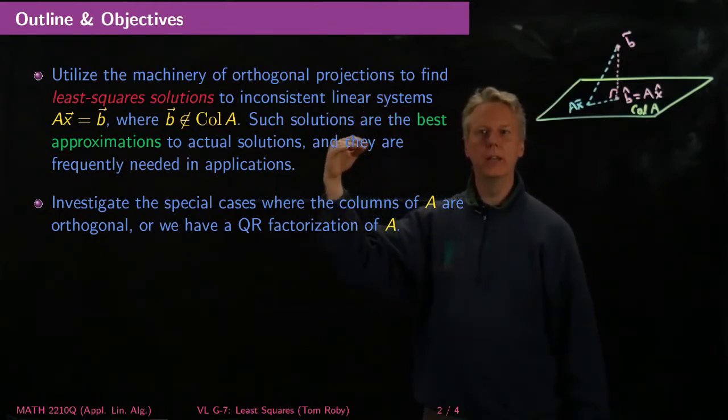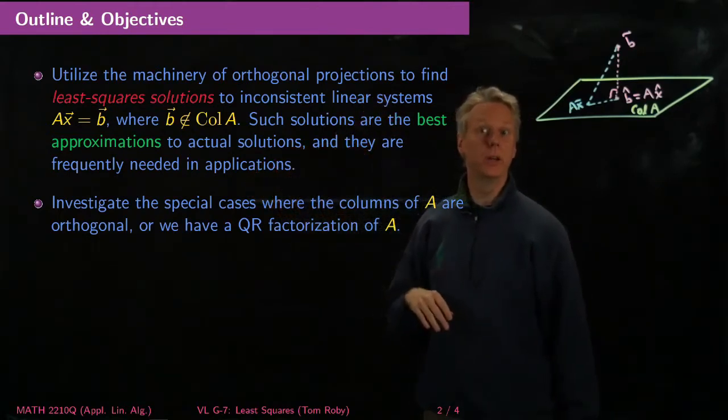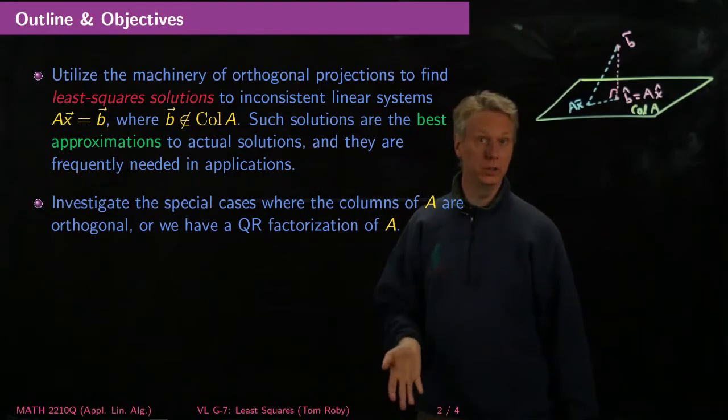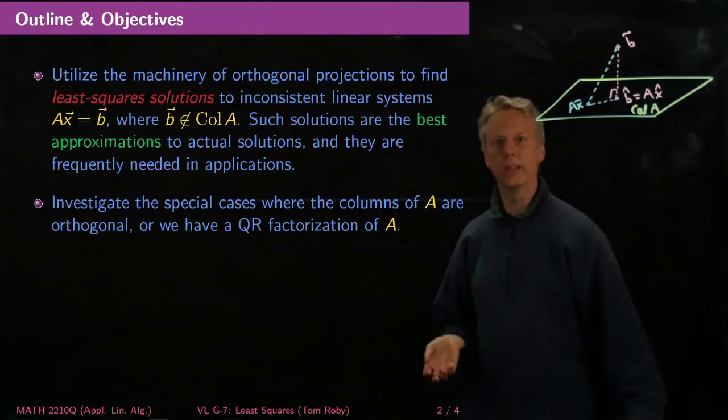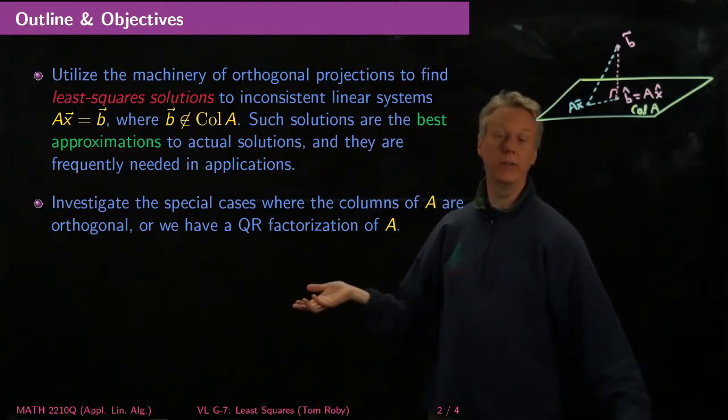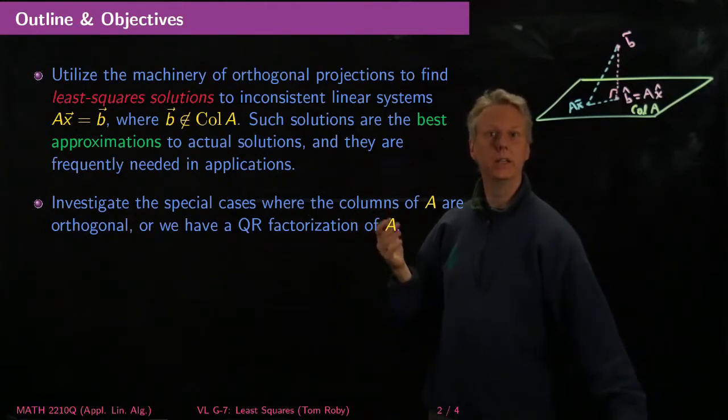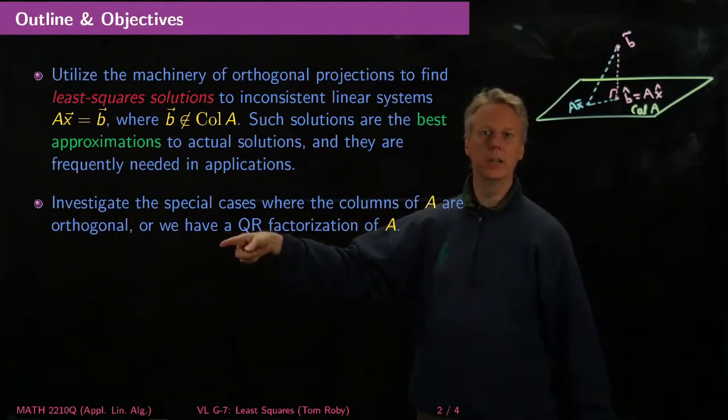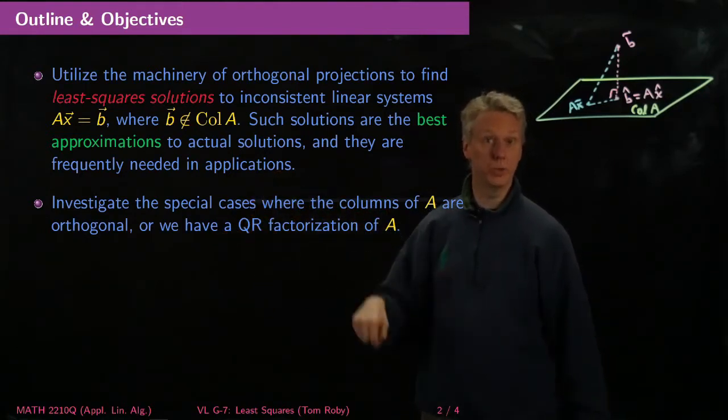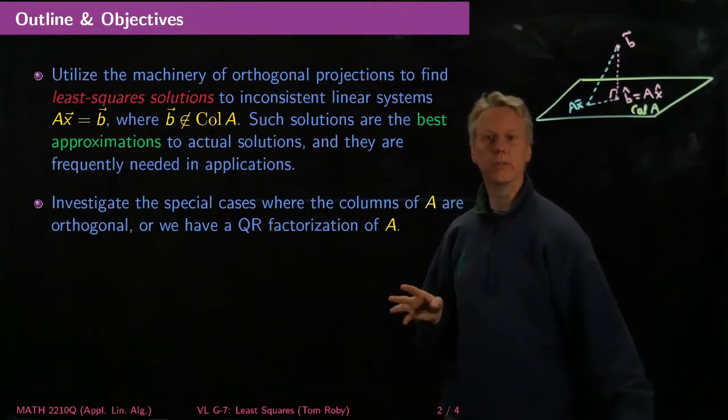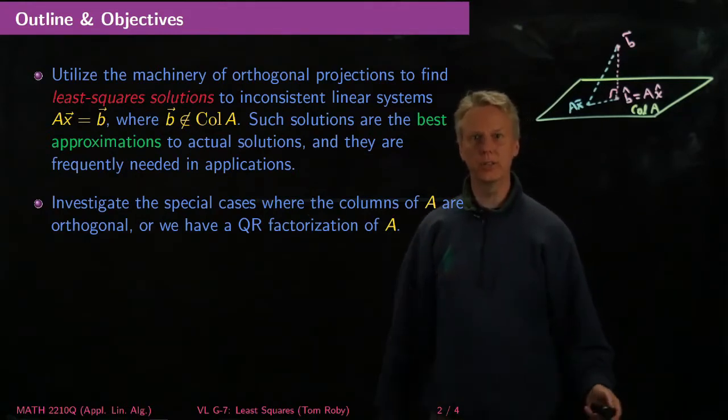Once we've talked about that, then we'll discuss the special cases where the columns of A are orthogonal. Then it's very easy to write down the solutions. Or if we have a QR factorization of A, where Q has columns which are ortho-normal, then in either of those cases, it's very easy to get the solutions.